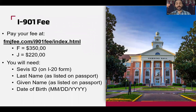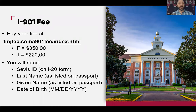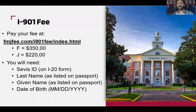To complete the I-901 fee form, you will need your SEVIS ID from your I-20 or DS-2019, your last name and given name — which you can check against your passport — and your date of birth. Note that the date of birth must be entered as month, day, year — not day, month, year as most of the world uses.